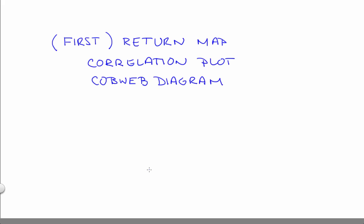There are several others that are really useful, and the goal of this segment is to introduce you to one of them. It's called the return map, also known as the correlation plot, and sometimes as the cobweb diagram.